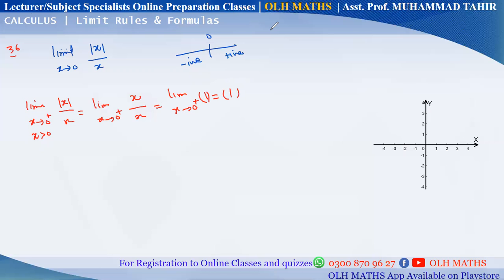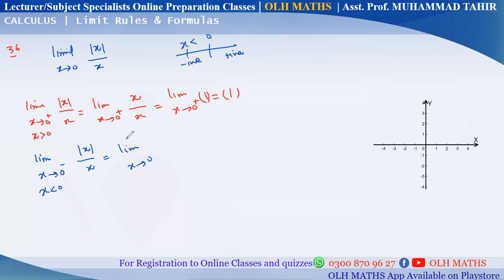For the left-hand limit: limit as x approaches 0 minus of |x|/x. From the left side, x is negative, so the absolute value of x is minus x. Therefore |x|/x = (−x)/x = −1. So the left-hand limit is −1. Since the left limit is −1 and the right limit is +1, the overall limit does not exist.